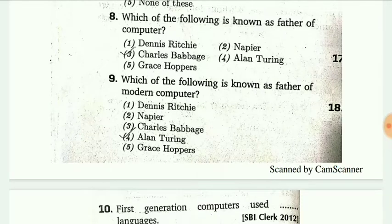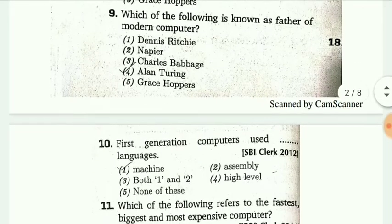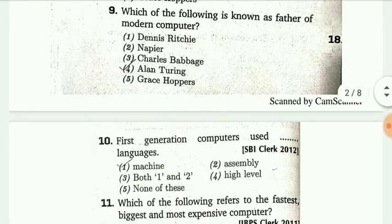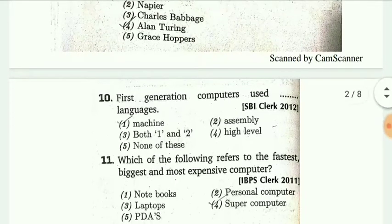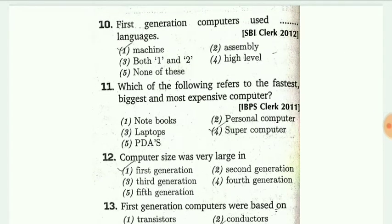Which of the following is known as the father of modern computer? The answer is Alan Turing. Next, the first generation computer used dash language. The answer is machine language.